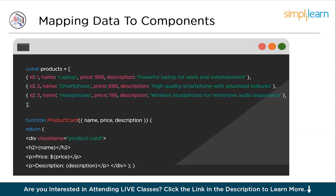When we use the map function on our list of products, it takes each product and does something with it one by one. In our case, we are creating a special card called product card for each product. This card is like a template for showing the details of that product. As the map function goes through each product, it grabs the details — like its name, price, and description — and passes them to the product card component, giving it all the necessary ingredients to create a card.